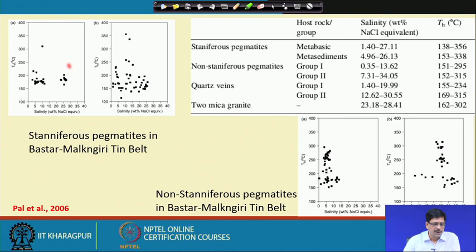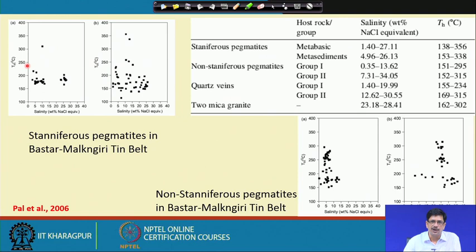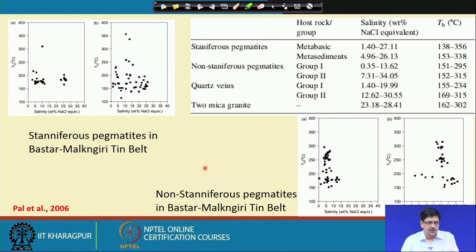For the stanniferous pegmatites specifically, two fluids of different salinities can be distinguished, suggesting that mineralization was brought about by mixing of two fluids. For a metal like tin, the low-salinity fluid is more likely a meteoric fluid that is more oxidizing, while the higher-salinity, more reducing fluid is capable of transporting tin as Sn²⁺ chloride complexes (SnCl₂ type). Mixing of these two fluids likely caused deposition of cassiterite mineralization. In non-stanniferous pegmatites, either the low-saline or the high-saline component is missing, supporting this interpretation.